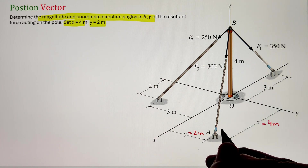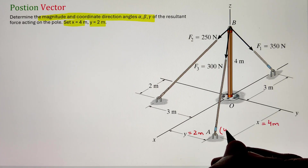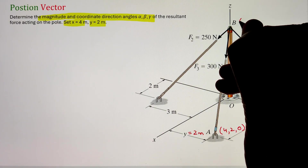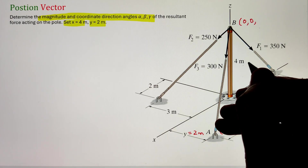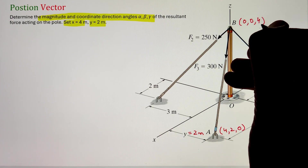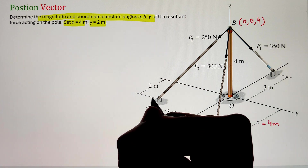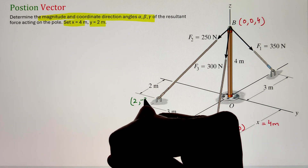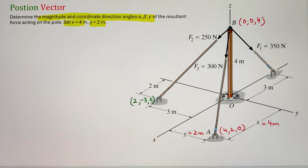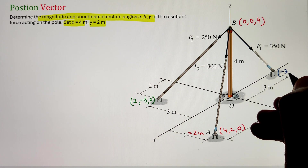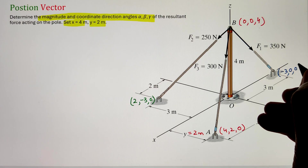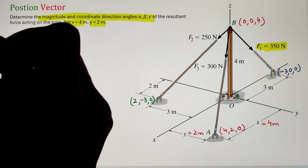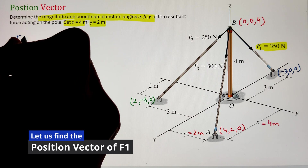Point A lies at a distance of 4 meters in the x direction and 2 meters in the y direction, whereas along the z axis it is equal to 0. Point B lies at a distance of 4 meters along the z axis, so the point coordinates will be 0, 0, 4. For F2, the head of that force lies at a distance of 2, negative 3, and 0. And finally, for force F1, the point coordinates of the head will be at negative 3, 0, and 0.